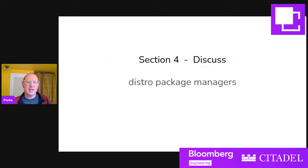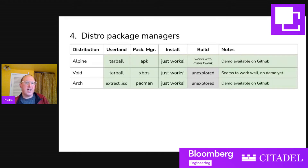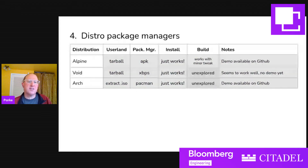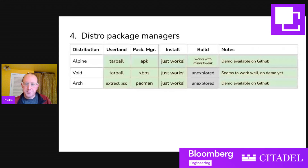Now let's discuss distro package managers, starting with Alpine, Void, and Arch together. Alpine and Void both publish tarballs you can download and extract to get a userland. For Arch Linux, which doesn't publish a tarball, I downloaded their installation ISO and extracted the live environment to use as a userland. The package managers are APK, XBPS, and Pacman respectively — all of them just work for installing packages inside LXroot. Building worked for Alpine with minor tweaks; I haven't tried building Void or Arch packages inside LXroot. Demos are available on GitHub for Alpine and Arch.